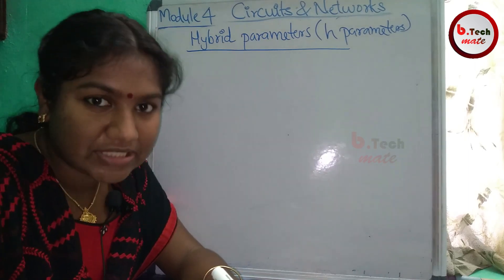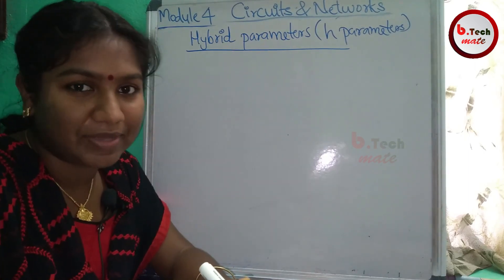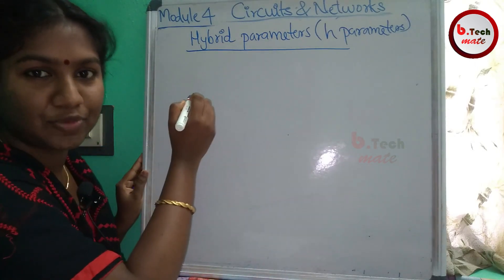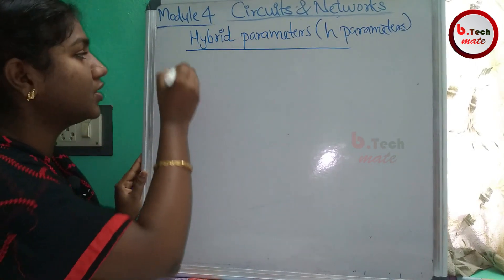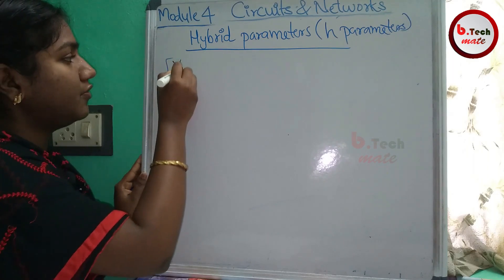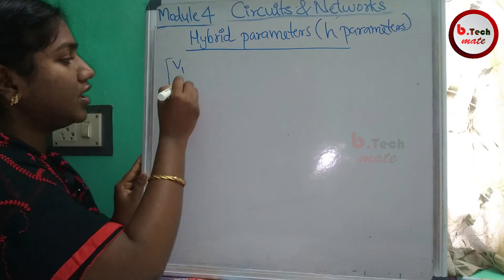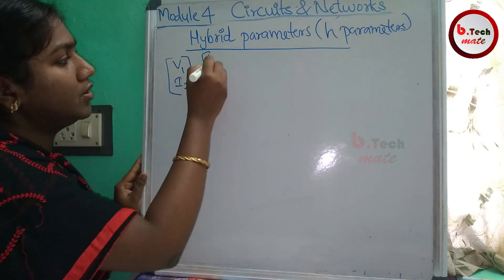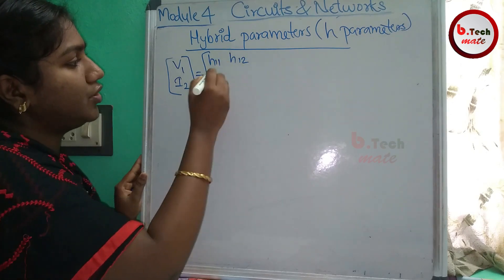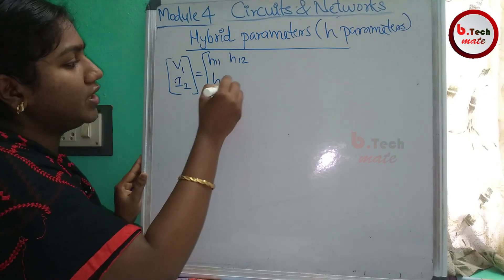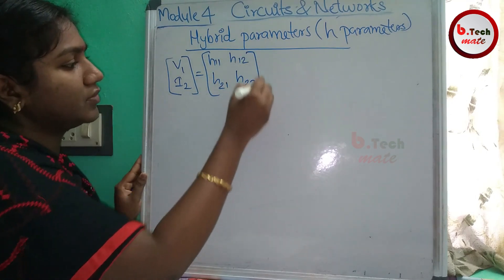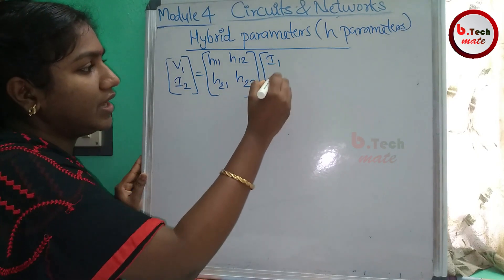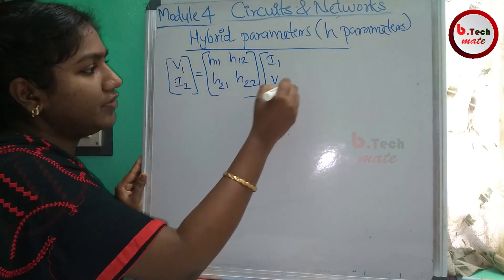This is a speciality of hybrid parameters. First, we have a matrix equation: V1 and I2 is equal to [h11, h12; h21, h22] times [I1; V2]. These are the hybrid parameters.